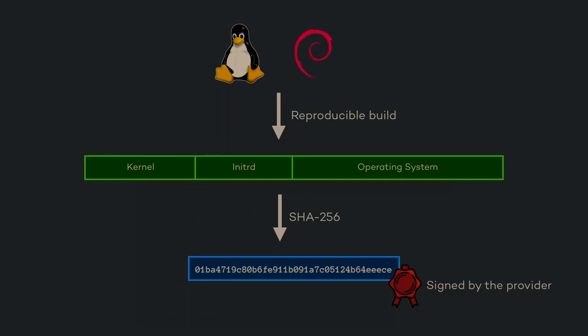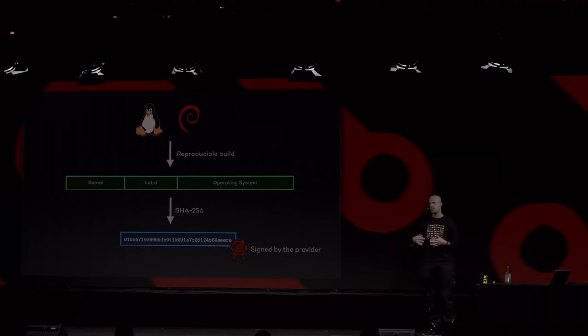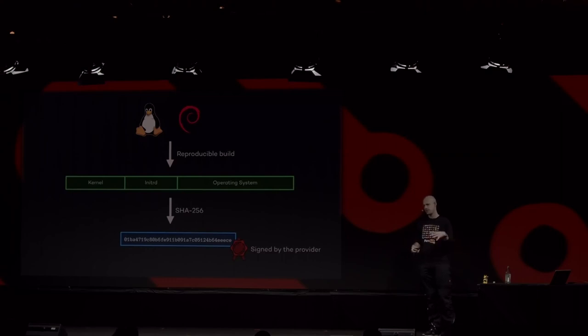Not only our firmware, but also our operating system can be built reproducibly. We build the kernel, the initial RAM disk, and the complete operating system into one blob that is a bit-exact copy of what everybody else has compiled. We then sign that, and the platform owner signs the hash of this blob. We can also configure stboot to require more than one signature — for example, if the platform owner has five administrators, stboot can be configured so that at least three of them have to sign the image before it's booted.